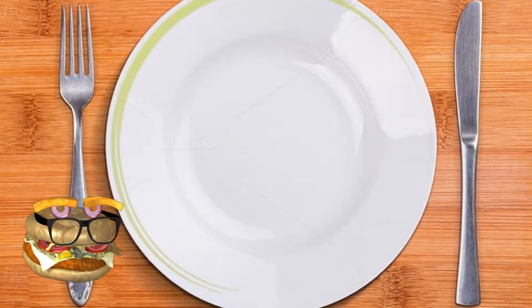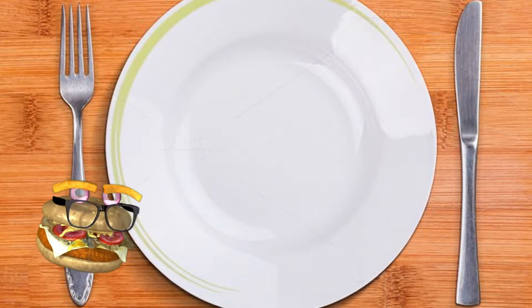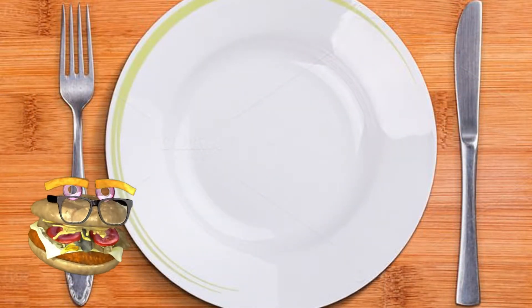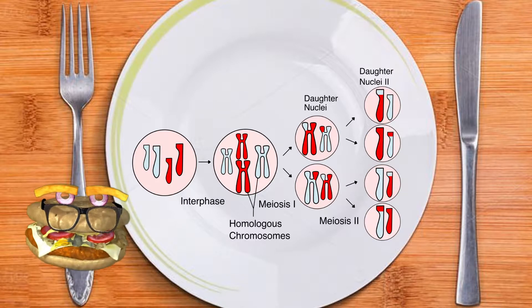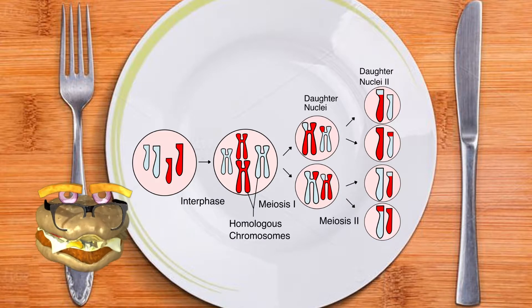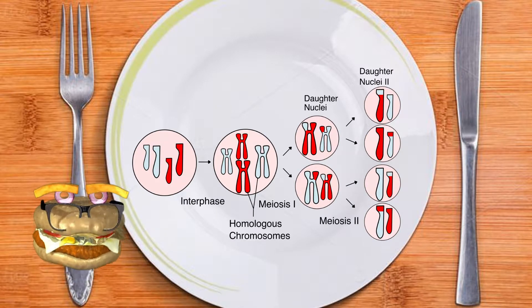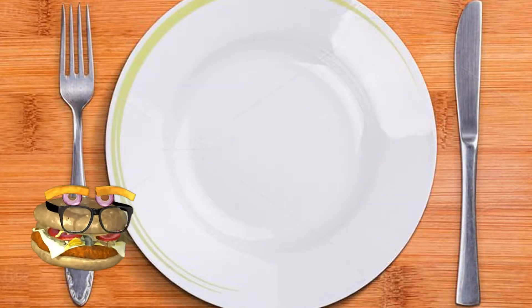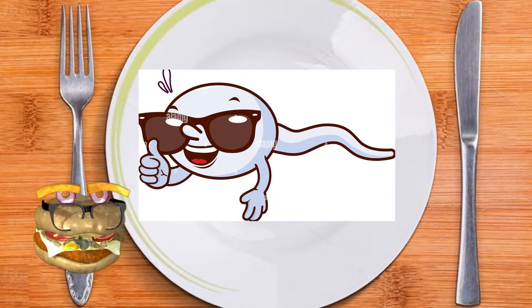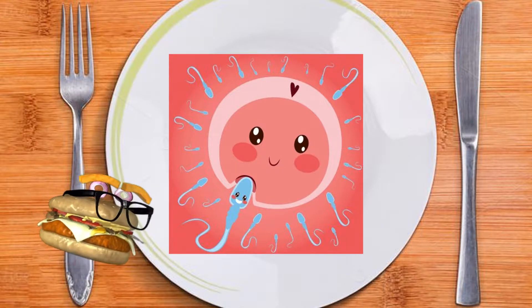Meiosis is associated with the process of sexual reproduction, as it is the process of creating gametes. Gametes, aka sex cells, are haploids, and they are used in the process of fertilization. Your typical gametes are your sperm cells in males and egg cells in females.